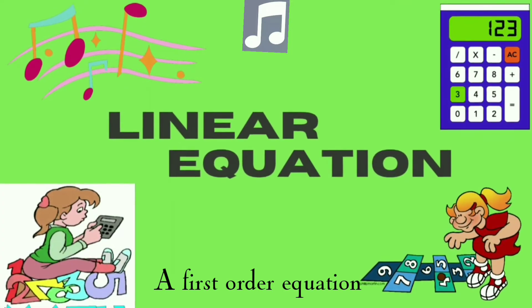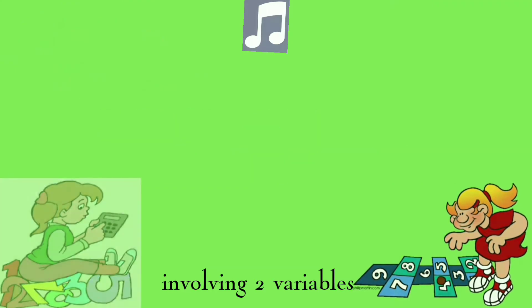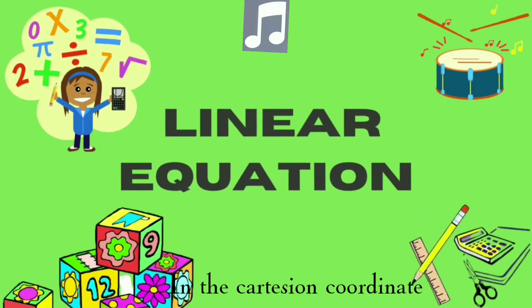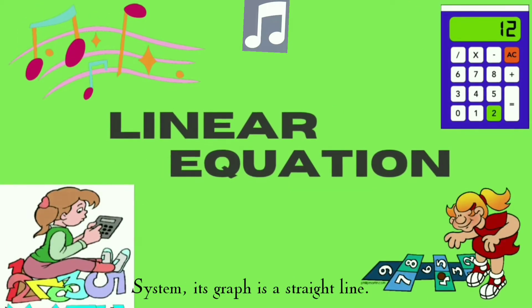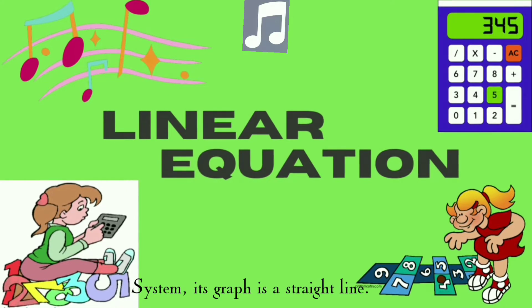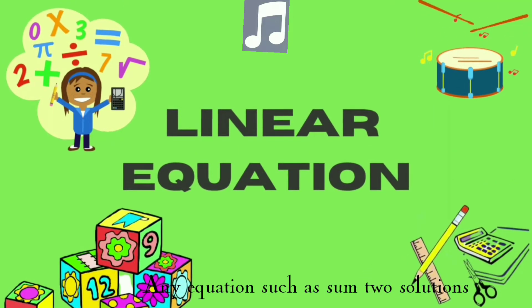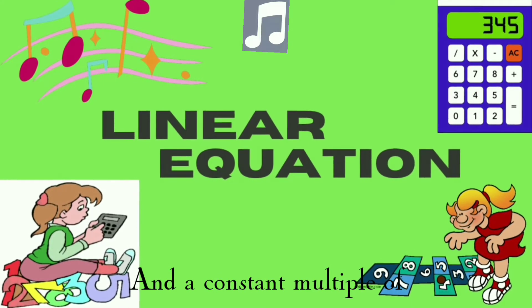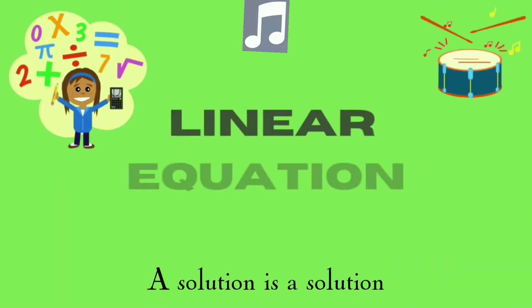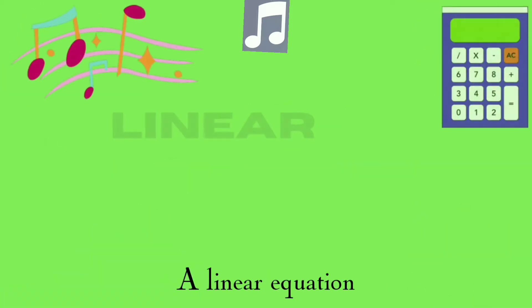A first order equation involving two variables in the coordinate system — its graph is a straight line. Any equation such that the sum of two solutions is a solution, and a constant multiple of a solution is a solution.